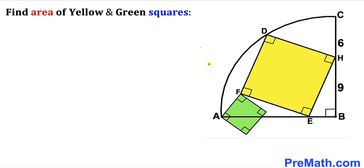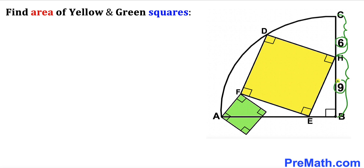Welcome to pre-math. In this video we have got yellow and green squares along with a quarter circle put together, as you can see in this diagram, such that line segment CH is 6 units and line segment HB is 9 units. Our task is to calculate the area of the yellow square as well as the green square.